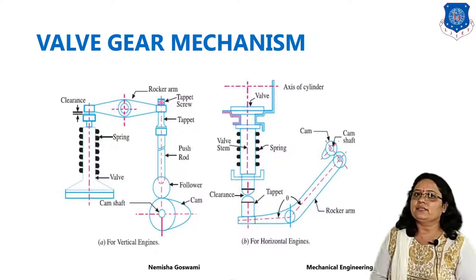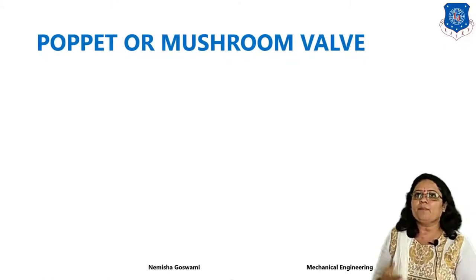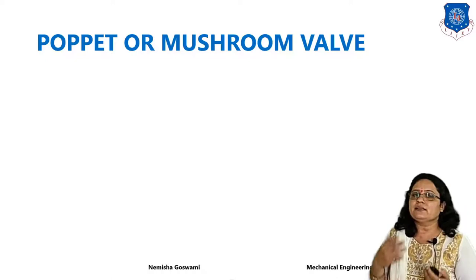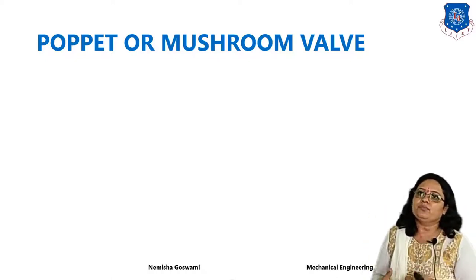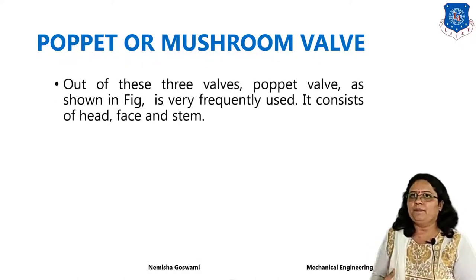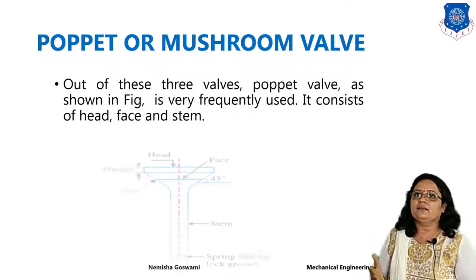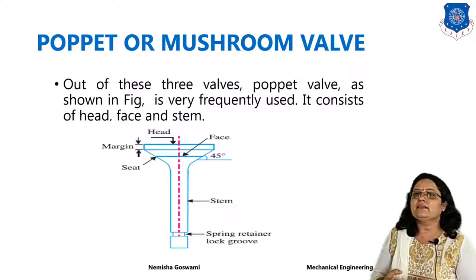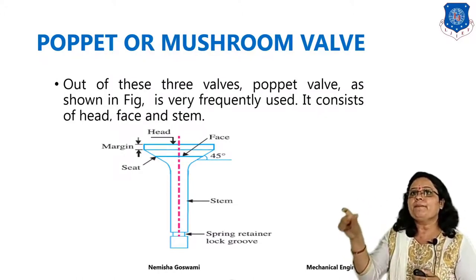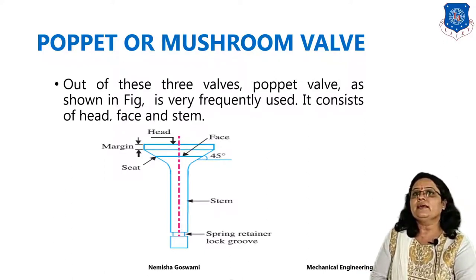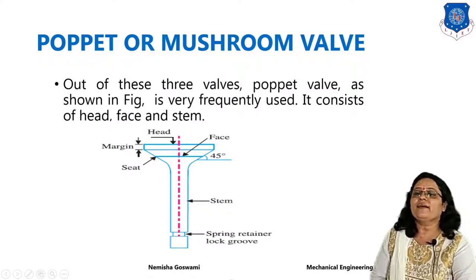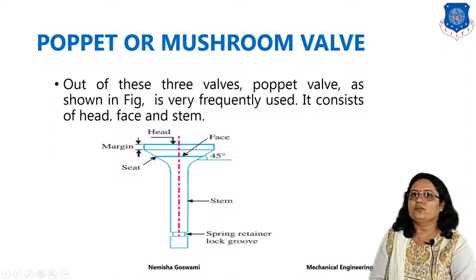When the cam moves, it transfers motion to the follower. That follower motion is transferred to the push rod, and finally, using the rocker arm, it is transferred to the spring. When we compress the spring, the valve will be opened, and similarly when the spring goes upward, the valve will be closed. Here we have to design the puppet or mushroom valve. As seen in the last lecture, there are three types of basic valves, but in the syllabus we have to design the puppet or mushroom valve. You can see in this diagram the basic parts: it consists of the hat, margin, seat, face, and finally the spring retainer — also known as the cotter group.